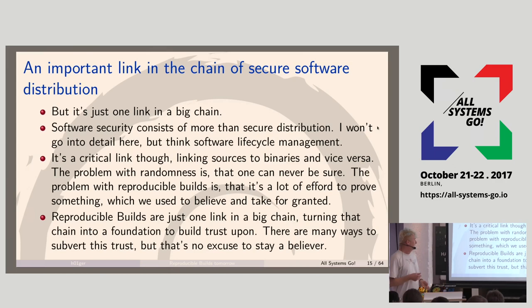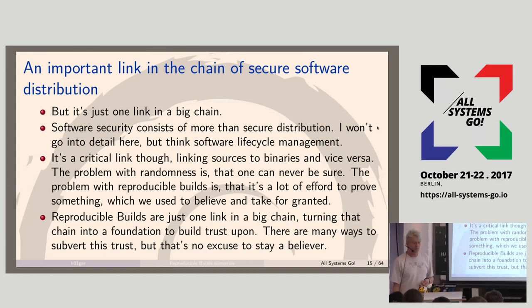The problem with randomness is that you can never be sure — as the old XKCD joke goes. The problem with reproducible builds is a bit different: there's a lot of effort to prove only a very small part of the secure software puzzle. But it's still a critical part, because all other effort put into source code is worthless if you can never be sure the binaries you're running actually came from the source.